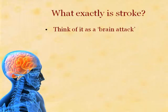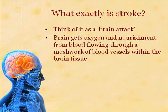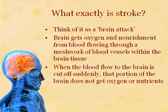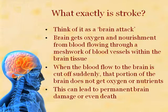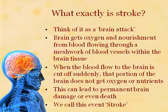So what exactly is a stroke? Think of it as a brain attack. The brain gets oxygen and nourishment from blood, like all the other organs in the human body. This blood flows through a meshwork of blood vessels within the brain tissue. When the blood flow to the brain is cut off suddenly, that portion of the brain does not get oxygen or any nourishment. This can lead to permanent brain damage or even death depending upon the severity of the event. This event is called stroke.